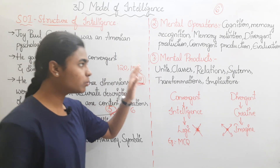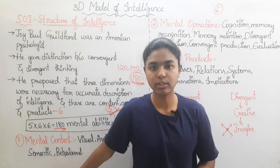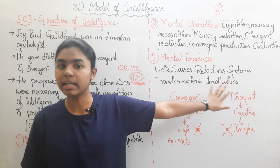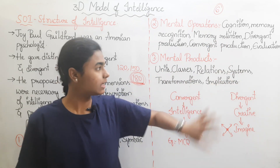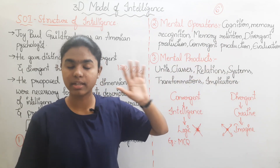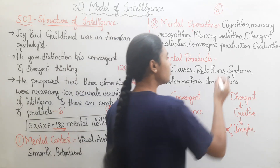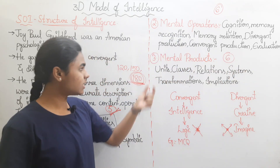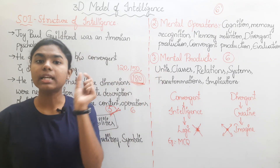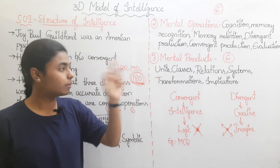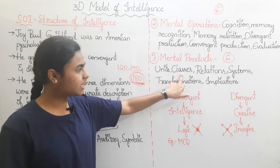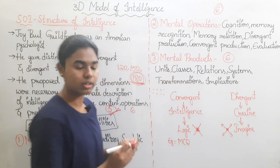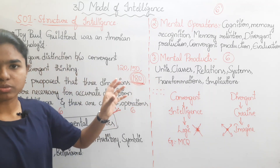The third dimension is Mental Products, which also has six mental abilities. First is Units — single items of knowledge. Second is Classes — grouping separate knowledge items that share similar features into categories.